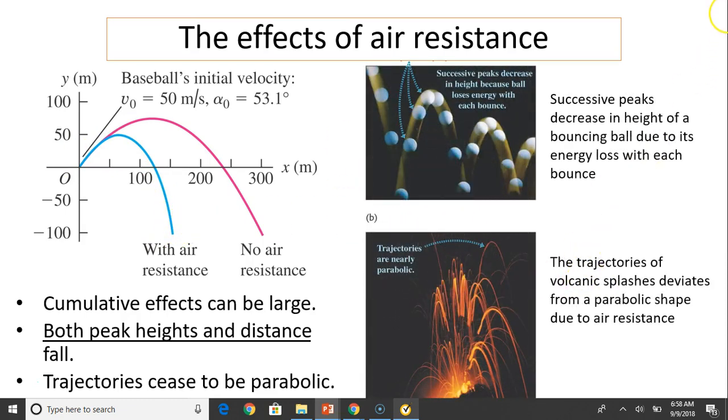Here are pictures for a bouncing ball. As you can see, the bounce ball becomes less and less high. That is because it lost energy due to air resistance. This graph on the bottom shows the trajectory of volcanic splashes. The trajectory is not parabolic due to air resistance.